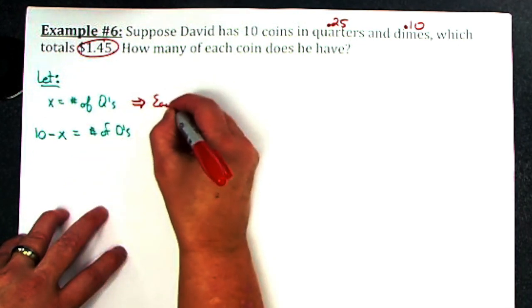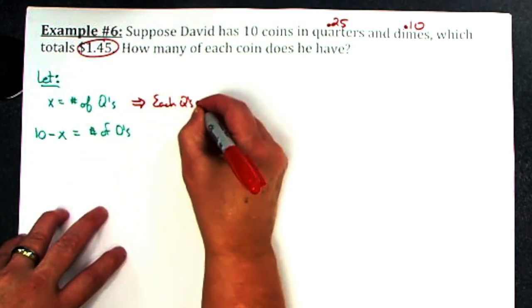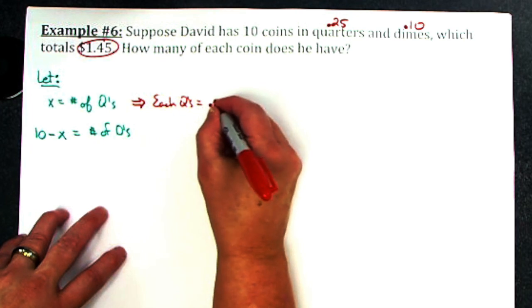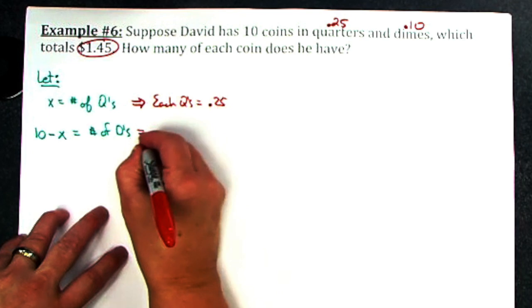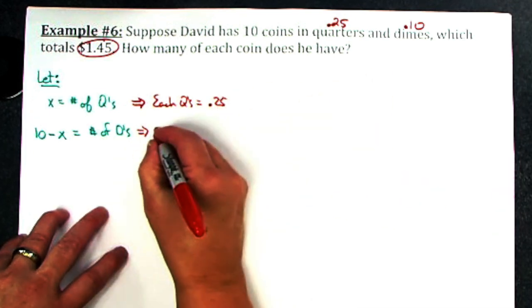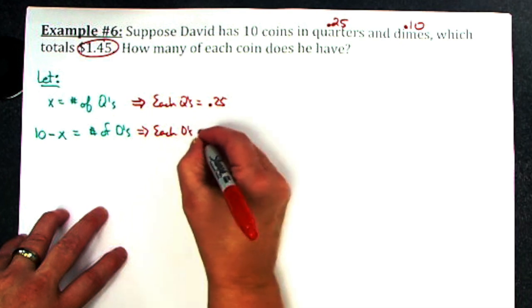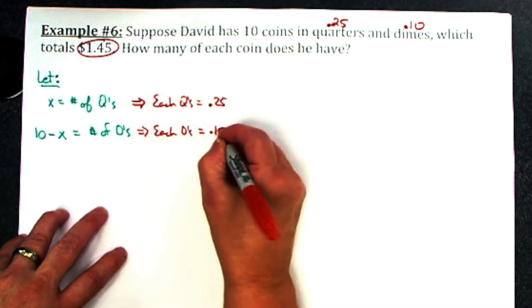What do we know about the quarters? Each quarter equals 25 cents, so 0.25. Each of the dimes represents 0.10.